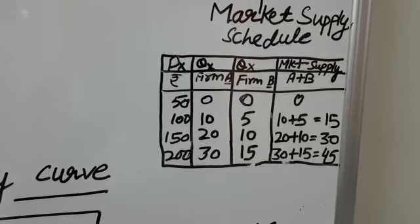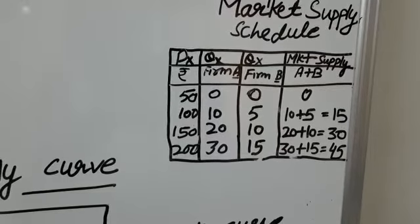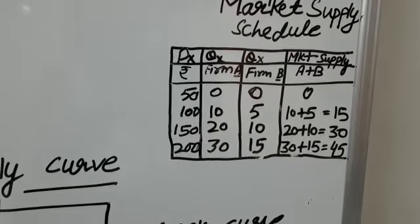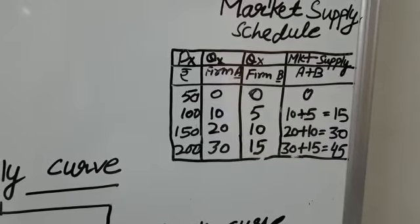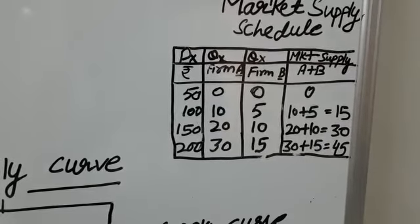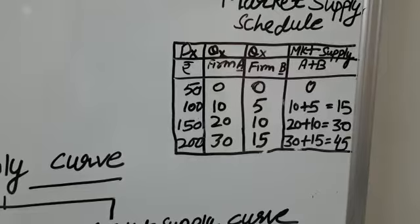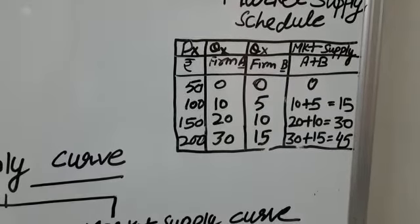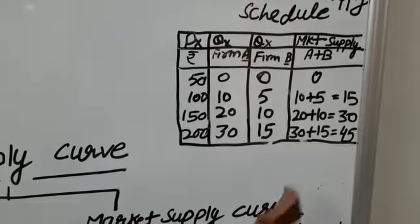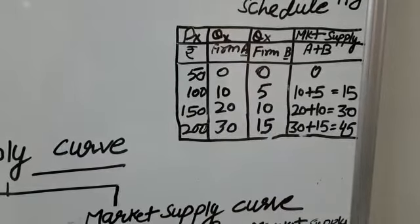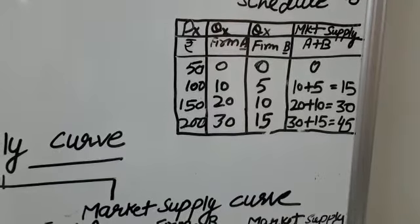This table is based on the assumption that there are only two suppliers of commodity X — firm A and firm B. At price Rs. 50 per unit, no firm is ready to sell even a single unit. When price increases to Rs. 100, firm A is ready to sell 10 units and firm B is ready to sell 5 units, so market supply is 15. At price Rs. 200, firm A is ready to sell 30 units and firm B 15 units, so market supply is 45 units. This also indicates a positive relationship between price and quantity supplied.